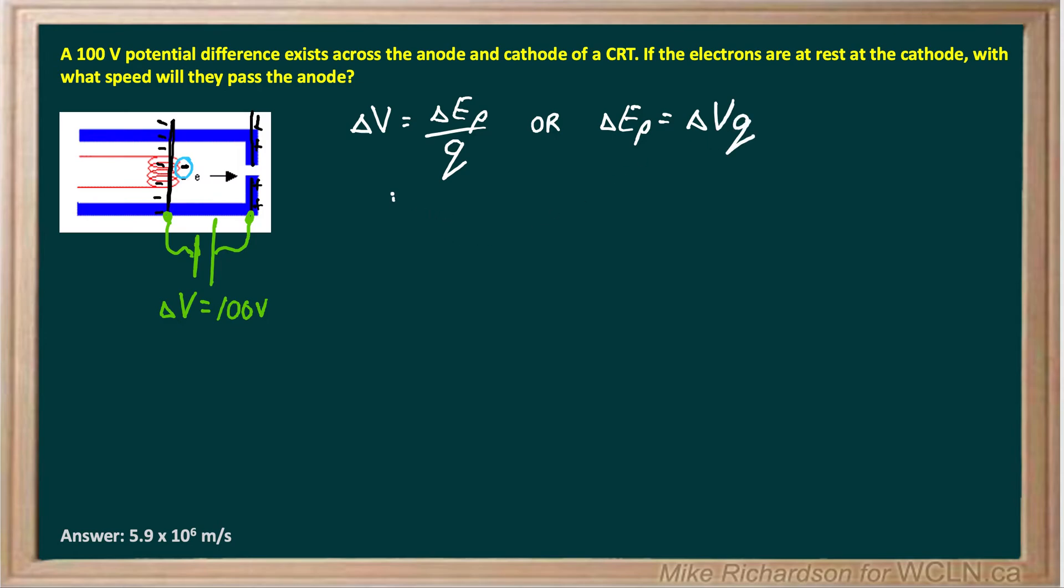From conservation of energy, our change in potential energy is going to get converted to kinetic. My change in potential energy is going to get converted to kinetic. It's going to change the object's kinetic. Whatever I lose or gain with potential, I'm going to counter it with my kinetic energy.